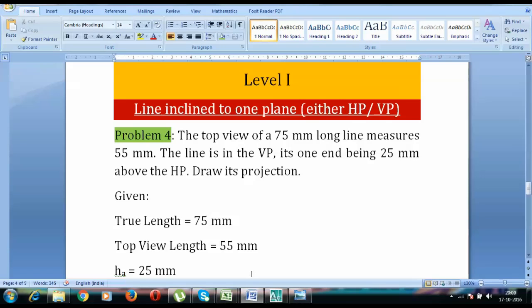Hey guys, what's up, Manas here. Today we're going to be discussing the last problem in level one. It's problem number four and it goes like this: the top view of a 75mm long line measures 55mm. The line is in the VP, the entire line is in the vertical plane.